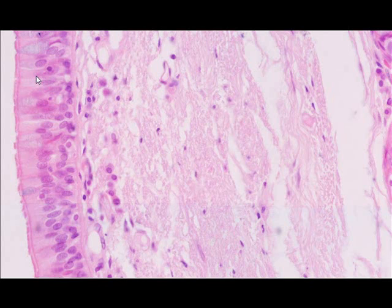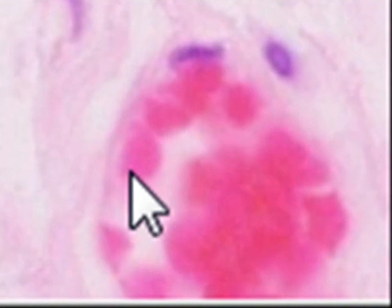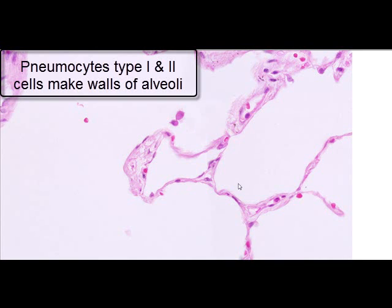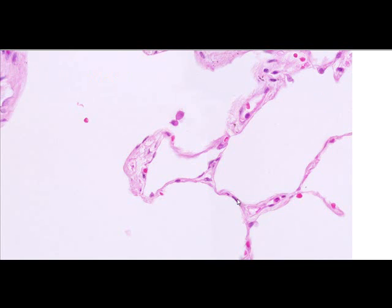Cytoplasm appears pinkish because most of its proteins are basic in nature, meaning cytoplasm has a pH of more than 7. Connective tissue is visible in this area and usually appears as a pinkish band of tissue with bluish nuclei within it. A blood vessel is visible with red blood cells in it — red blood cells do not have nuclei; they are anucleated cells and appear red. In the lung tissue, you can see flattened nuclei of type 1 pneumocytes along the alveolar walls, while type 2 pneumocyte nuclei are rounded in shape.